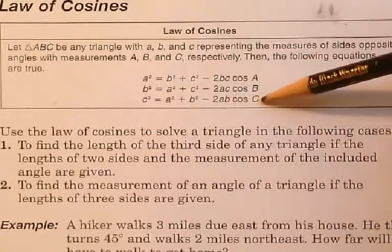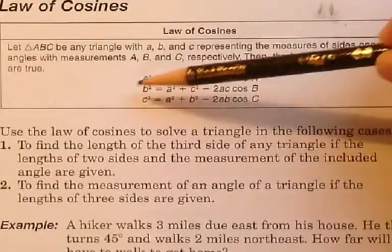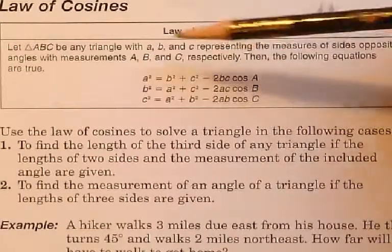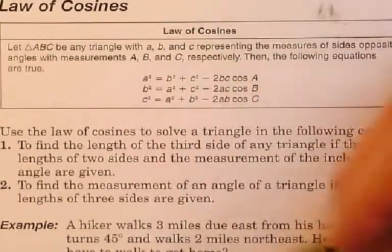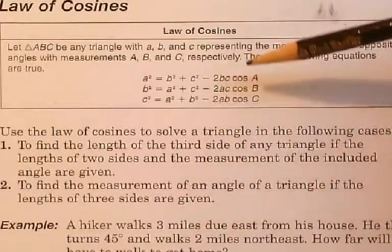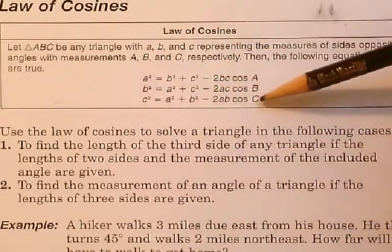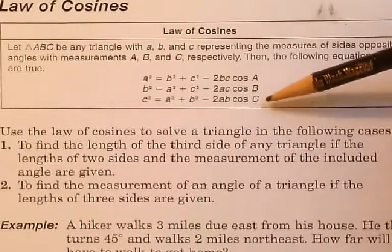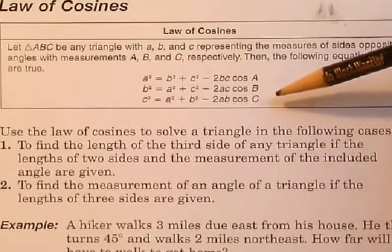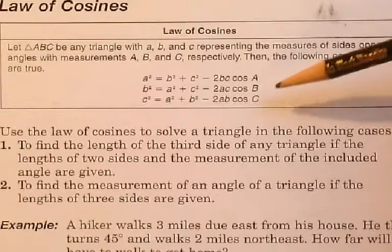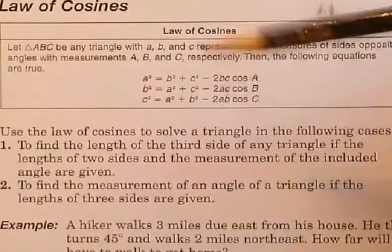There's a lowercase c there and a capital C here. Lowercase b there and capital B there. So you can name your triangle any which way as long as you're looking for whichever side you're looking for and whatever angle you know. You have to know two sides and one angle, or all three sides. So here we go — let's do one.